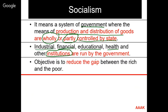The aim of socialism is to reduce the gap between rich and poor. Money is like water — it flows from the mountain to the sea. Water flows from mountain to sea even though there is scarcity of water in the mountain. Similarly, money always flows from poor people to rich people; rich people become more and more rich while poor people become more and more poor. This creates inequality of wealth in society. To reduce this gap is the aim of socialism.